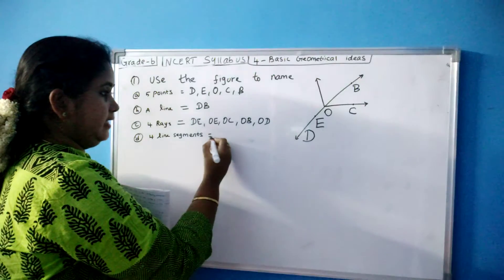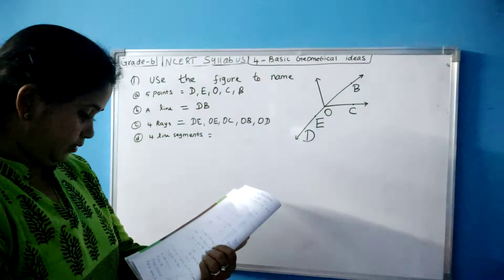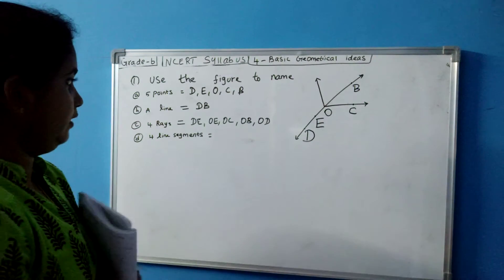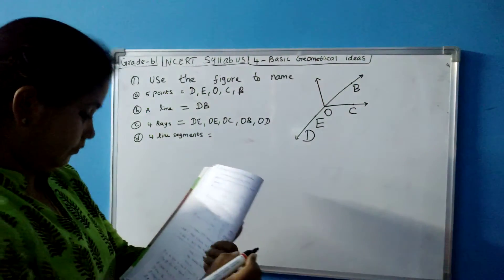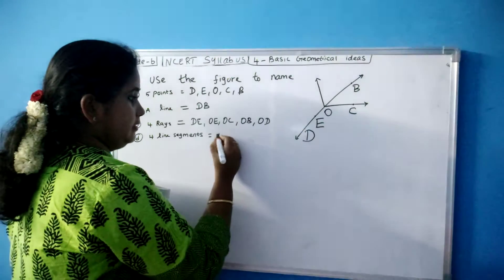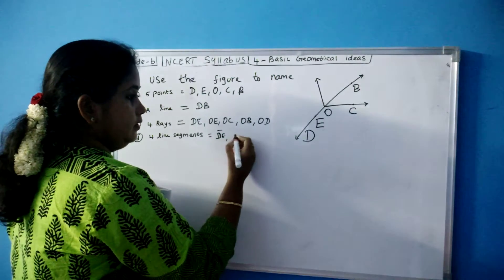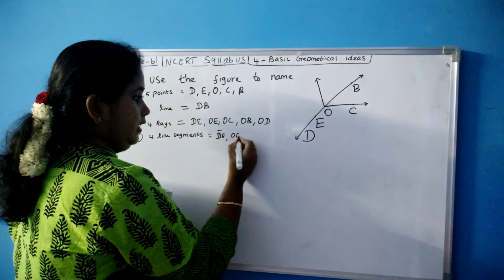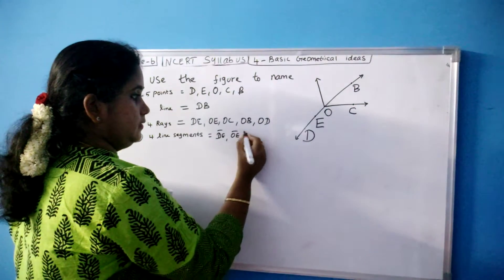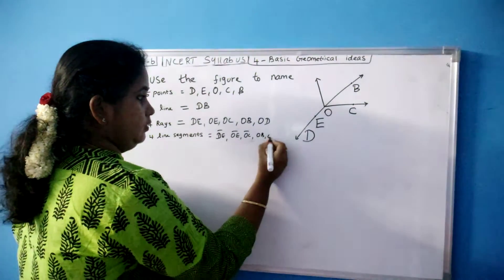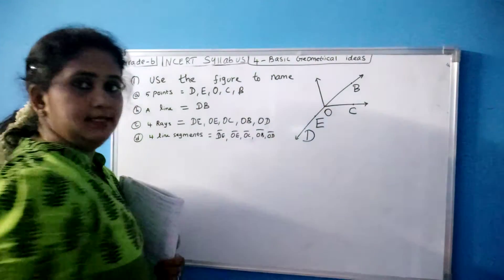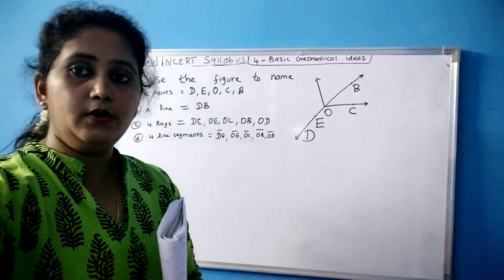Then 4 line segments. Can you name 4 line segments? Similarly line segments: DE, OE, OC, OB, OD. So these are the line segments. Now we move on to the next.